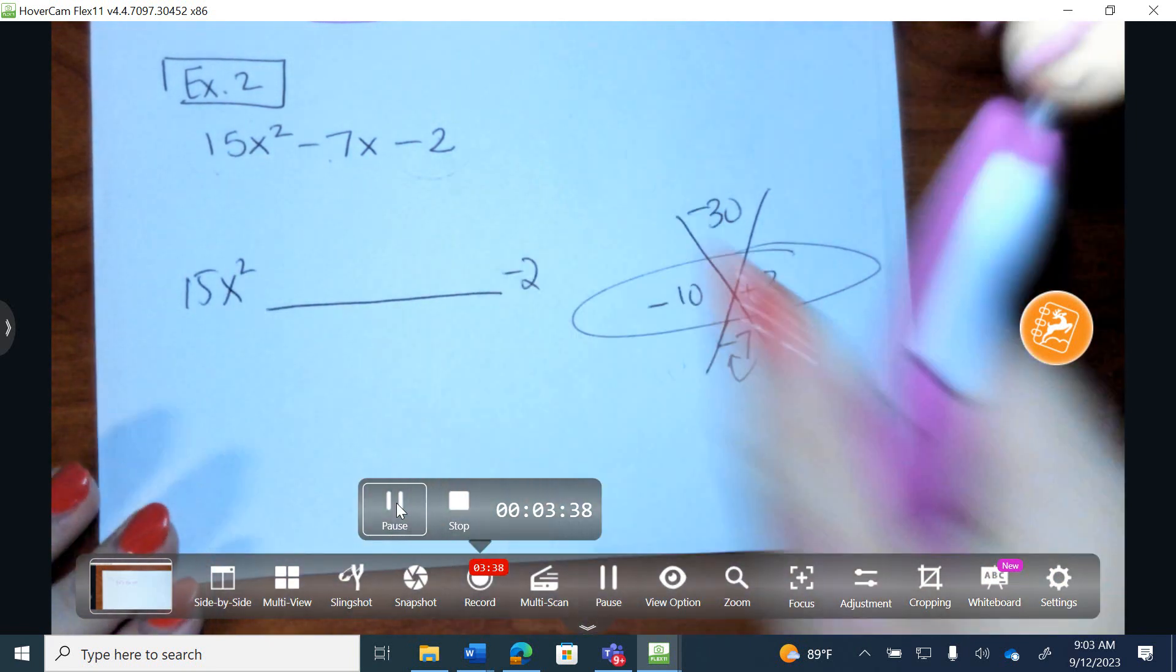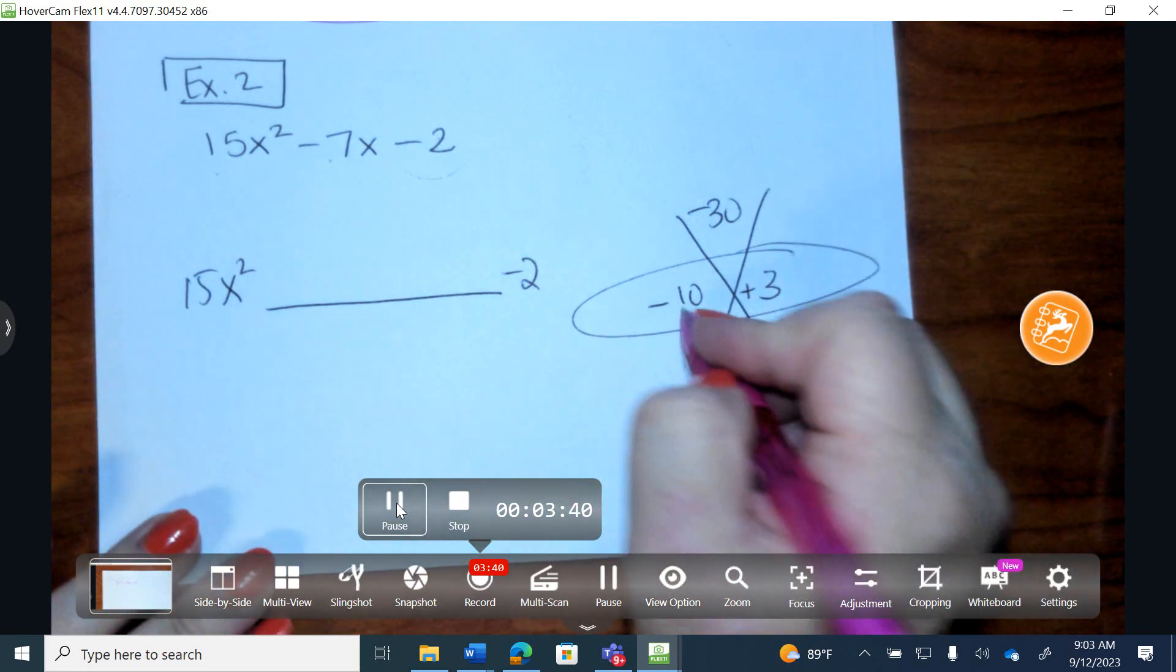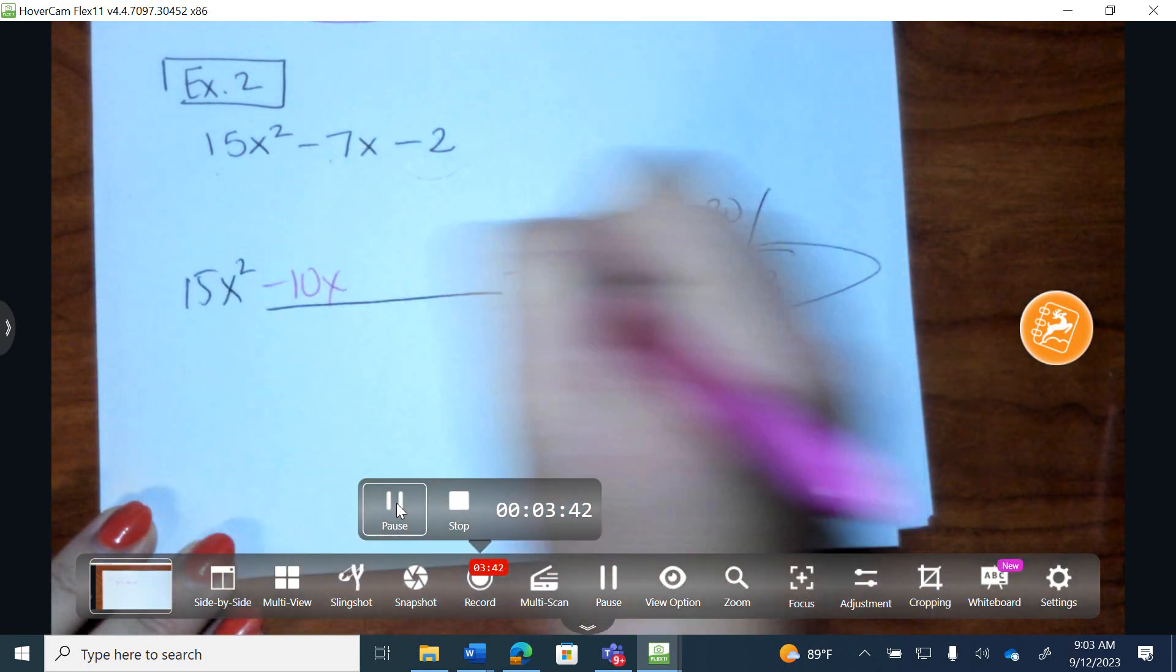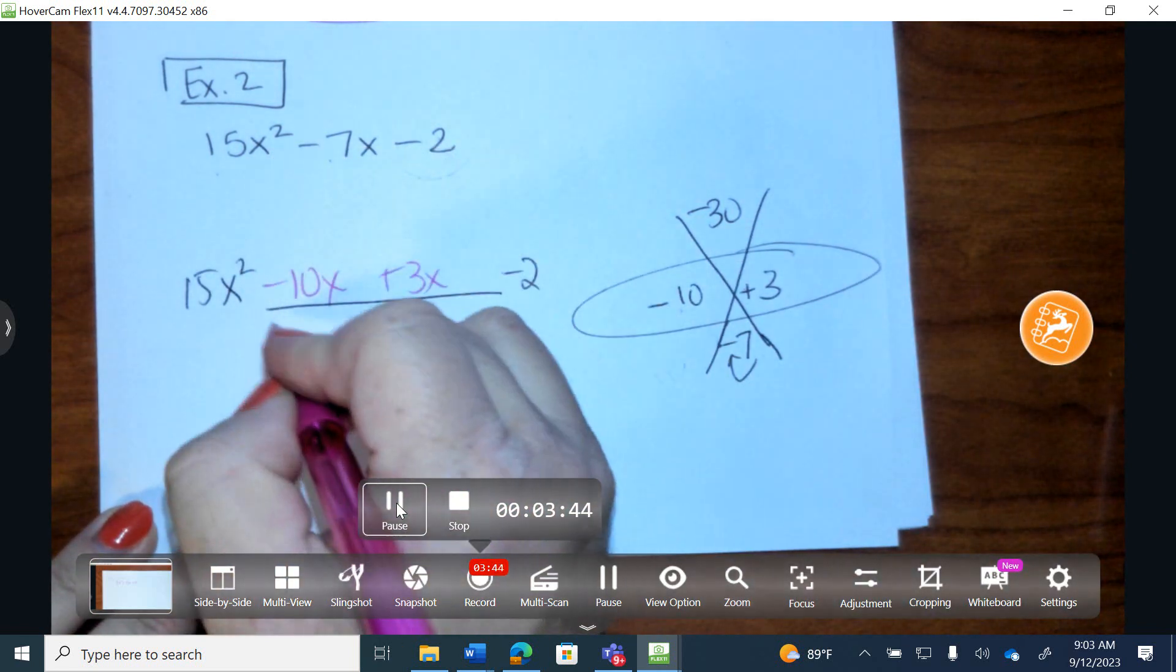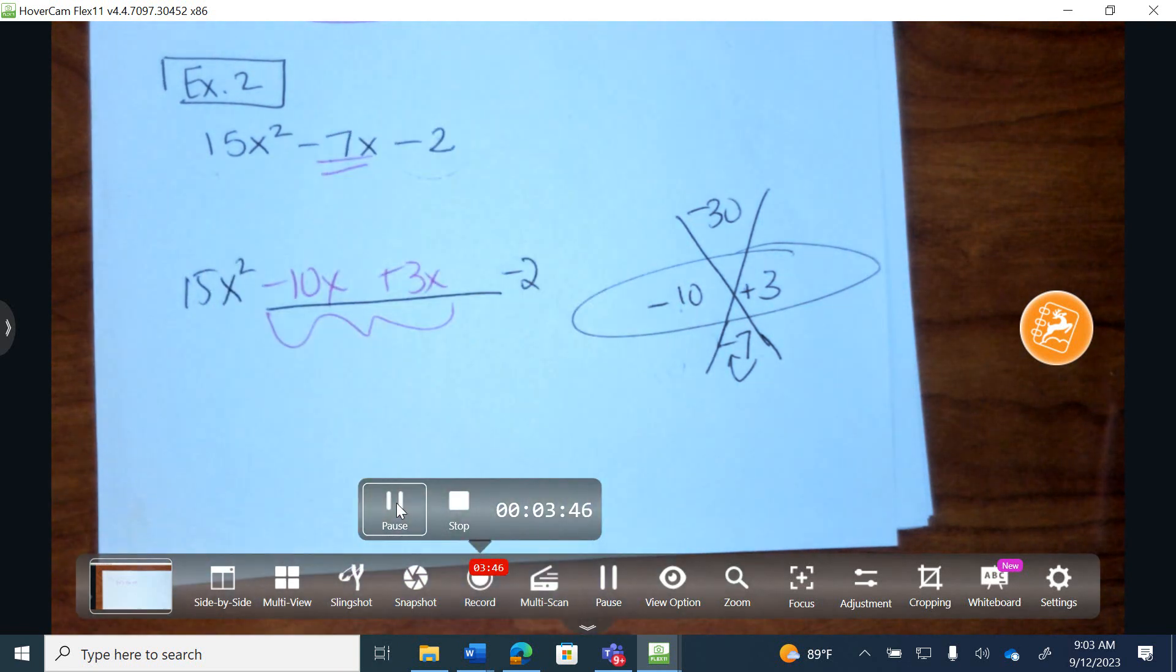So off to the side, I have 15x squared, leaving a big space. Now in this space, I'm going to come back and write down what I have. I have a negative 10x and a positive 3x. These need to combine to equal your B.